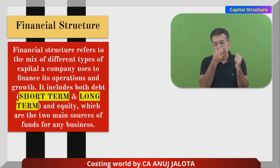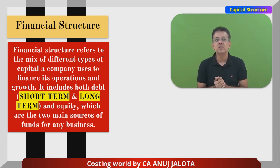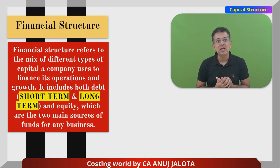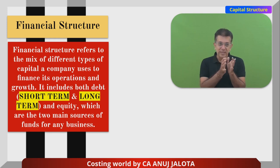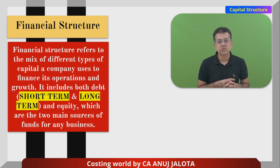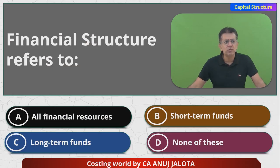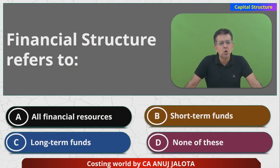All those things form part of Financial Structure but do not form part of Capital Structure. So Financial Structure is quite a big concept compared to Capital Structure. In Capital Structure we only have long-term sources of finance, but in Financial Structure we have all sources of finance. Financial Structure refers to the mix of different types of capital a company uses to finance its operations and growth. It includes both debt — short term and long term — and equity, which are the two main sources of funds for any business. So the correct answer should be A: all financial resources.